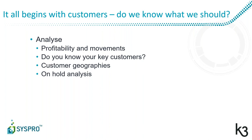Do we know who our most important customers are? Do we know how much profitability we're getting? Do we know how many goods we're transferring to them? Do we know where our customers are? Have we put any of them on hold, and if we have, why? Rather than give you screenshots, I'm going to show you where you can go within SysPro to take a look at this yourself and run through some of the analysis, starting with the standard tools available within the toolkit.